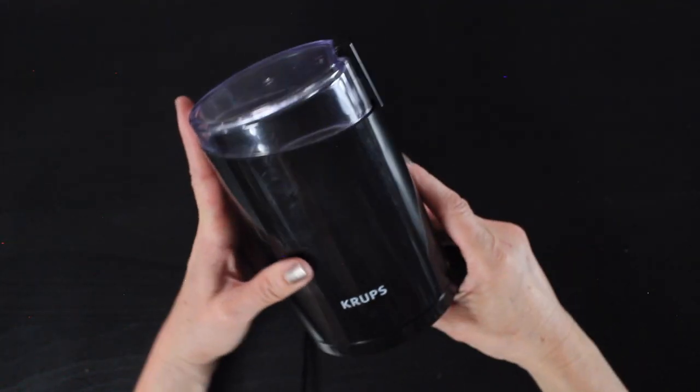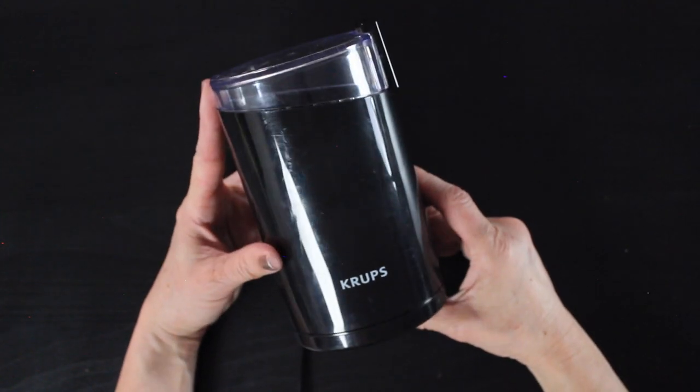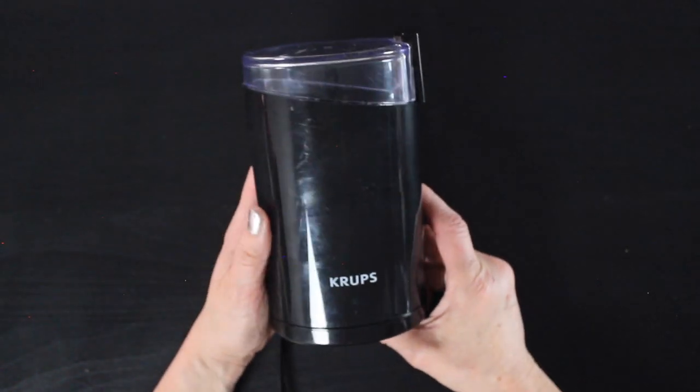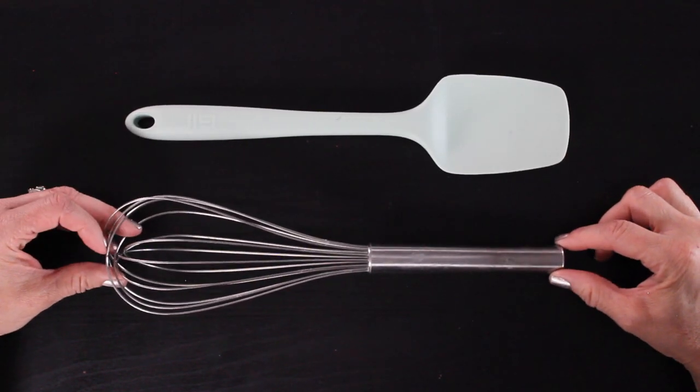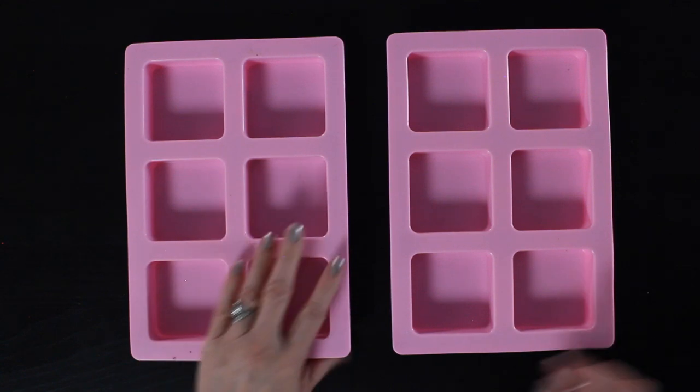You'll need a coffee grinder. This is the one from my kitchen. It's not super fancy, but it works. This is to grind up our rice and our almonds and our beans. You'll need a spatula and a big whisk.